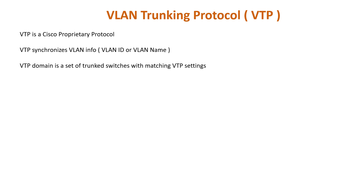To better understand the benefit of using VTP in your network, consider an example with a network of 100 switches. Without VTP, to create a VLAN on each switch you would have to manually enter the VLAN creation command on each switch. VTP enables you to create the VLAN only on a single switch, which can then propagate information about the VLAN to each switch in the same VTP domain, causing other switches to create that VLAN too.